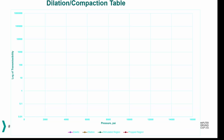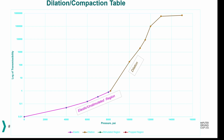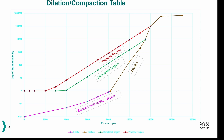Going back to the original plot, we have the dilation curve adjusted to match the injection. Then we have the stimulated region — an area of higher transmissibility around the fracture, but not as high as the propped region. The propped region is the area immediately around the perforations where we have the proppant, and that is where you have the highest transmissibility, which is retained for a longer period of time as the proppant holds the fractures open.